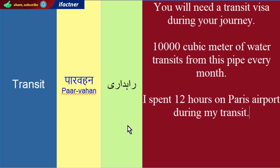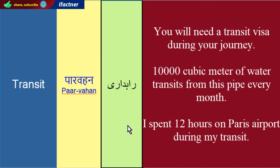यानि मैंने बारह घंटे Paris airport पर गुजारे क्योंकि मैं गुजर रहा था. शायद मैं point A से point C पर जा रहा था, point B जो था Paris airport था. तो उस transit station पर मैंने बारह घंटे गुजारे. तो दोस्तों, उम्मीद है कि आपको word transit का meaning समझ आ गया होगा.